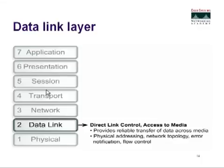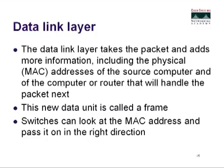Then down to the data link layer, which provides reliable transfer of data across media and deals with physical addressing, network topology, error notification, and flow control. The data link layer takes the packet and adds more information, including the physical MAC address of the source computer and of the next computer or router that will handle the packet. This new data unit is called a frame. Switches can look at the MAC address and pass it on in the right direction. So we went from segments to packets, and now we're at frames.